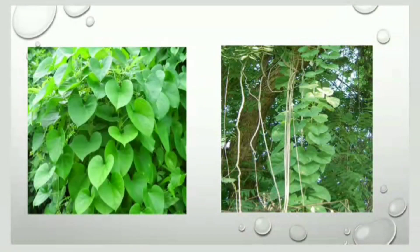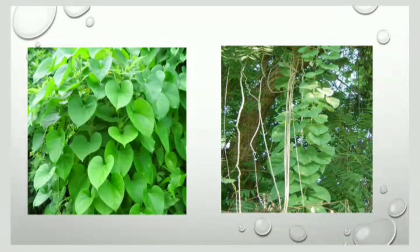These pictures are of Tinospora cordifolia. As you can see in the diagram, this is a climbing shrub that climbs over trees and also has aerial roots. As you can see in the second diagram, these are the aerial roots from these climbing shrubs. The leaves are simple and alternately arranged.